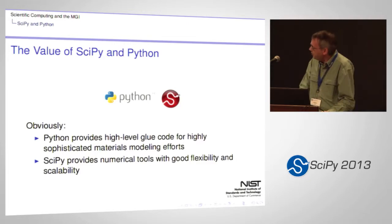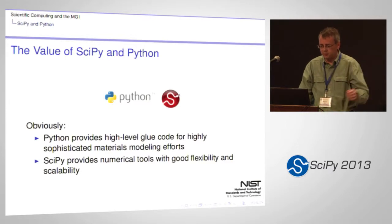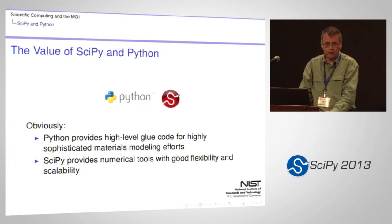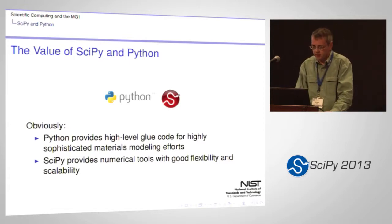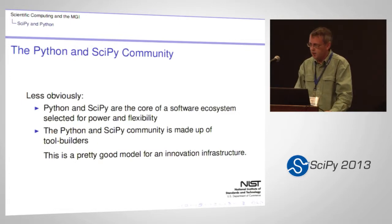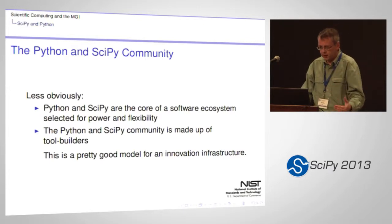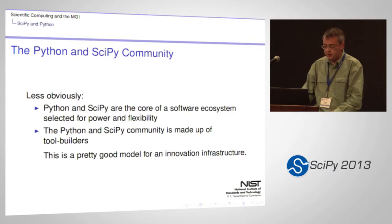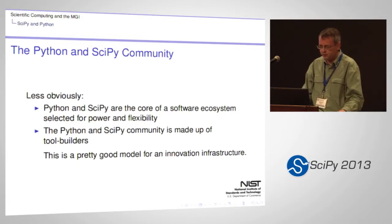The alignment between SciPy, Python, and the MGI effort is pretty obvious at a couple of levels. Python famously provides high-level glue code — you can do rapid prototyping, it's easy to learn, very well-structured, and works at very high levels of sophistication. SciPy provides numerical tools with good flexibility and scalability, and really here is a stand-in for the whole SciPy ecosystem. Python and SciPy are at the core of a software ecosystem selected for its power and flexibility because the people who developed it are mostly scientists using it to solve problems they themselves have. The Python and SciPy community is made of tool builders — people solving their own problems. This is not a bad model at all for an innovation infrastructure such as we are trying to build.